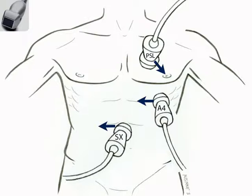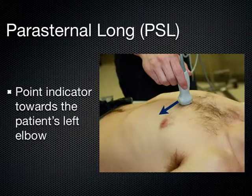In the parasternal long axis, we have the indicator pointing towards the patient's left hip or left elbow, and the probe is right against the sternum. For the apical 4 chamber and apical 5 chamber, we've got the indicator pointing to the patient's right. This is all with the dot on the left-hand side of the screen, which is in the standard radiology configuration.